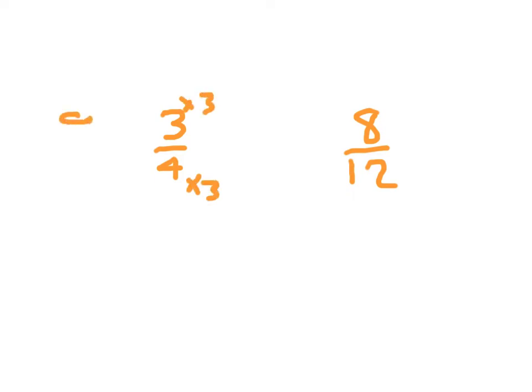3 times 3 is 9, 4 times 3 is 12, so 3 fourths is really equal to 9 twelfths. So 3 fourths does not equal 8 twelfths because 9 twelfths does not equal 8 twelfths. In other words, I would write no for whether or not those are equivalent.